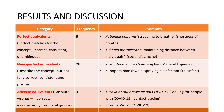Near-perfect equivalents are those that describe a concept but do not do so fully — some aspects of the original concept are left out. A good example is kusamba manja, meaning 'washing hands,' which was used to represent hand hygiene. As we know, hand hygiene involves a lot more than only washing hands. We had a total of 28 near-perfect equivalents.